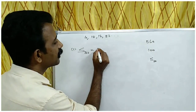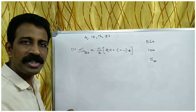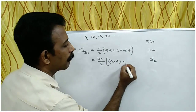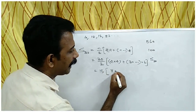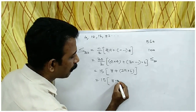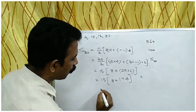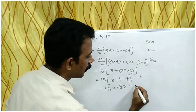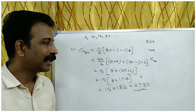For part C, find the sum of the first 30 terms. Using the formula S equals N by 2 into 2A plus N minus 1 into D: that is 30 by 2 into 2 times 4 plus 29 times 6, which is 15 into 8 plus 174, equals 15 into 182, which gives 2730. So 2730 is the sum of the first 30 terms.